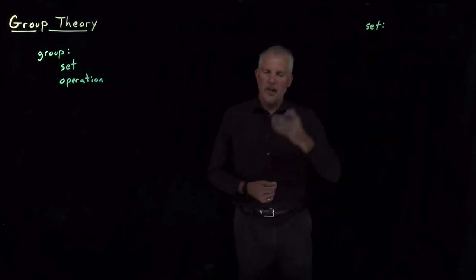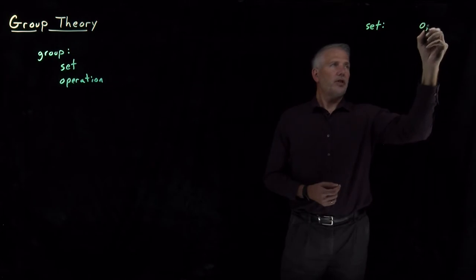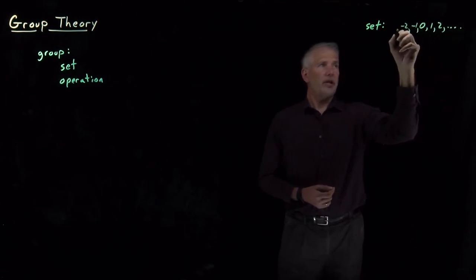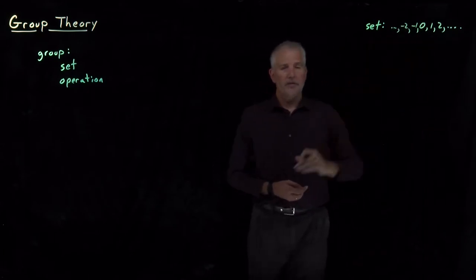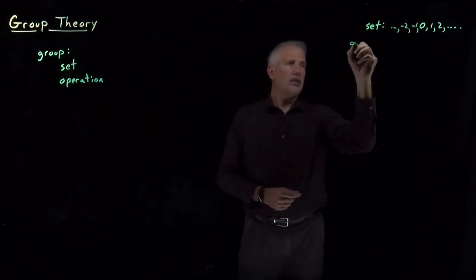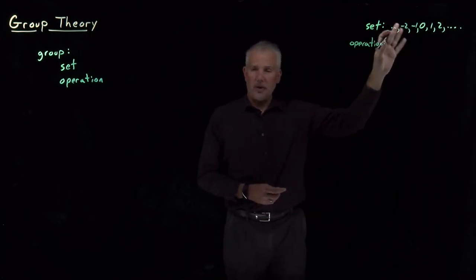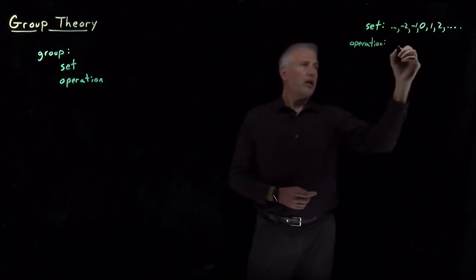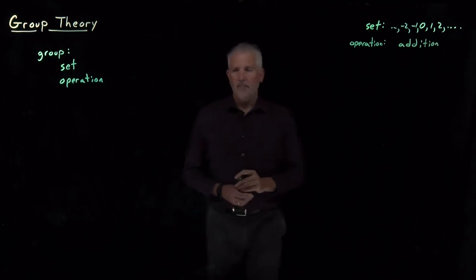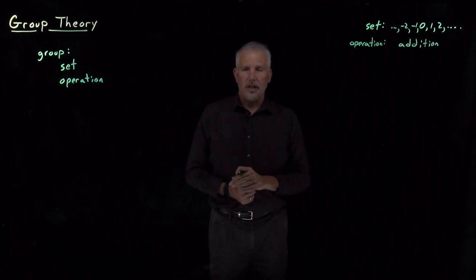The main example we'll use to understand the properties of a group is the integers: 0, 1, 2, 3, and so on, and also the negative values, negative 1, negative 2, and so on. That full set of integers is the set we'll be thinking of. We can combine integers in various ways — we can add them, subtract them, divide them — but the operation we'll consider is addition. So as we talk about the properties of a group, we'll use adding of integers to understand what those properties mean.